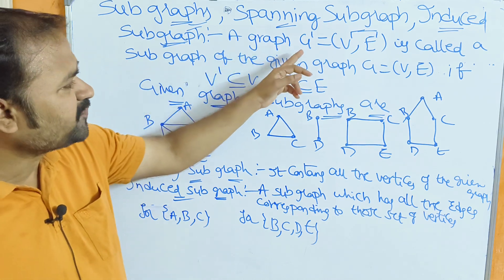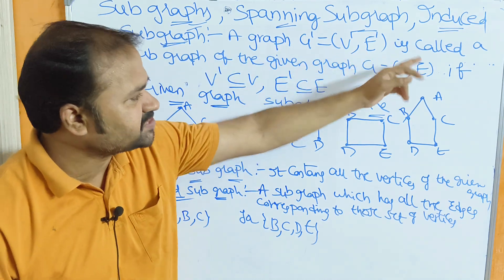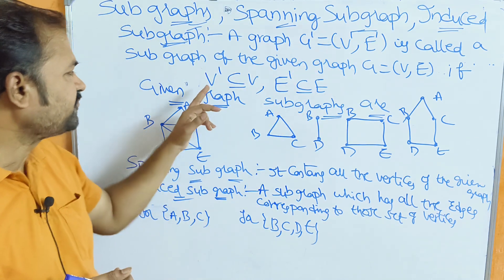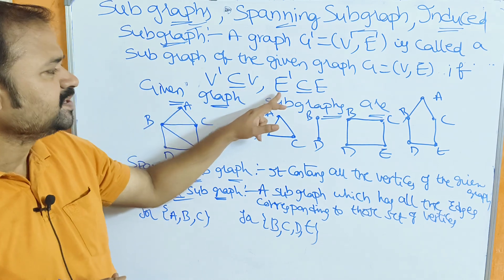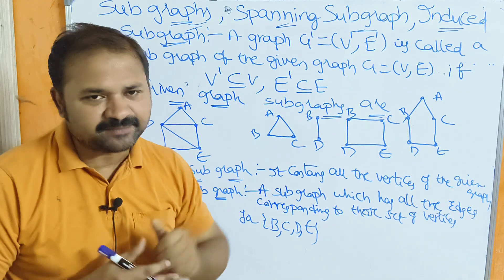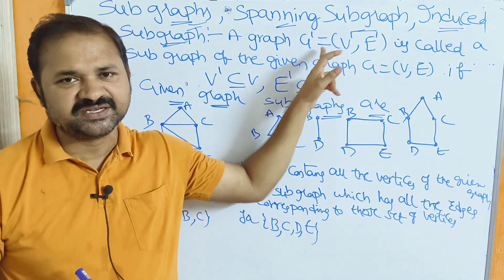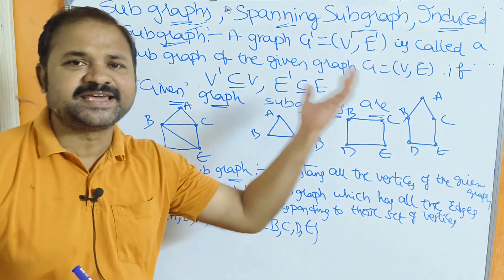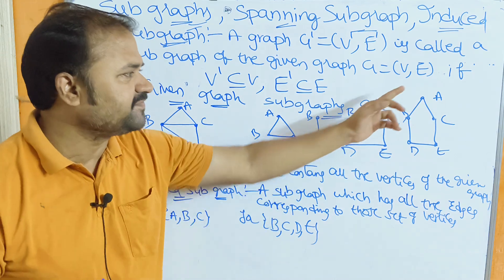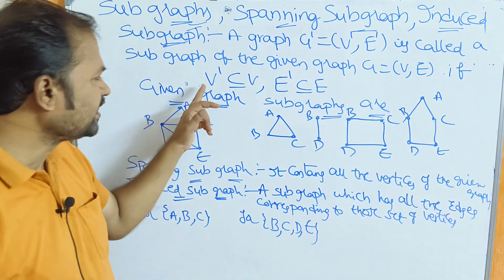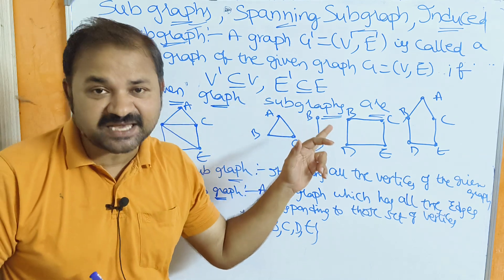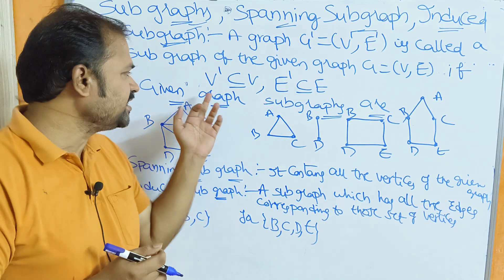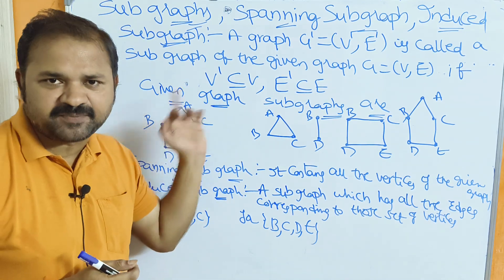A graph G dash equal to V dash comma E dash is called a subgraph of the given graph G equal to V comma E if V dash is a subset of V and E dash is a subset of E. The subgraph is represented by G dash, with vertices V dash and edges E dash, while the given graph is denoted by G with vertices V and edges E.